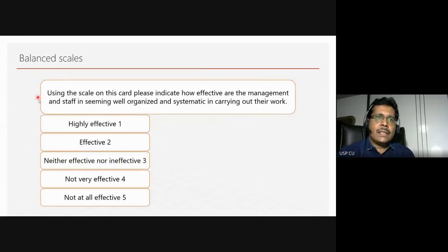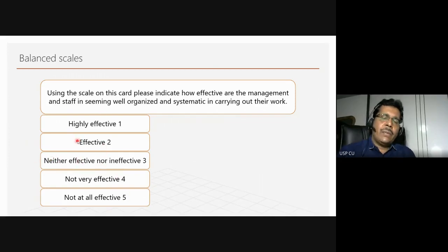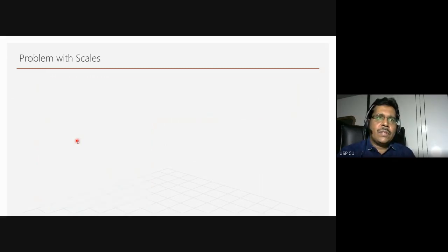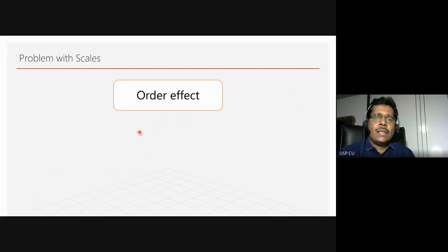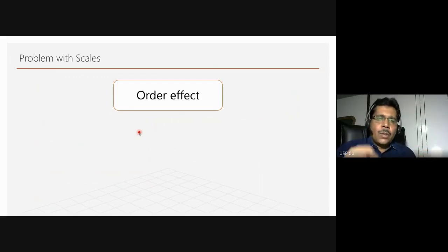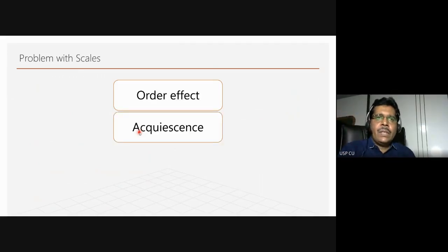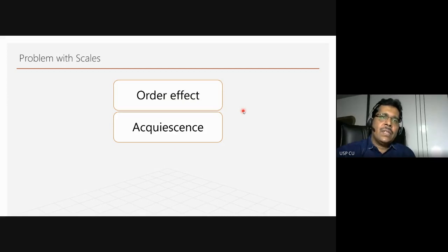This is an example of a Likert-type balanced scale — a five-point scale. Respondents are asked to indicate how effective management and staff are in carrying out their work, from 'highly effective' to 'not at all effective.' We also have unbalanced scales. The problem with scales is the order effect — people tend to go for the ones on the left and not the right. There is also the problem of acquiescence, where you tend to agree with a contention unless it is something extremely disagreeable. These are all established effects that have been measured.